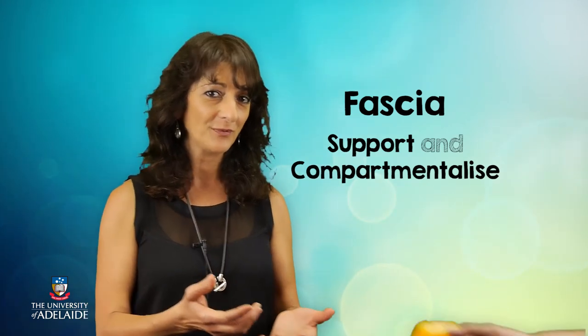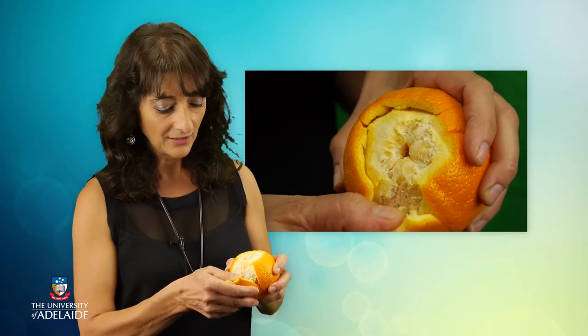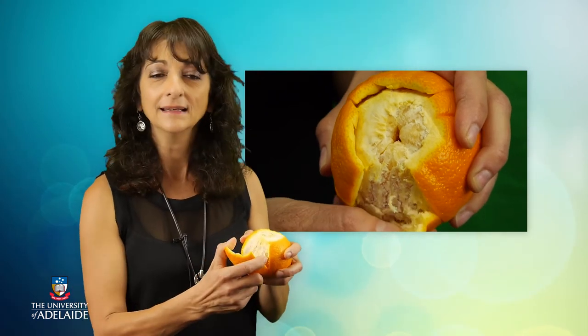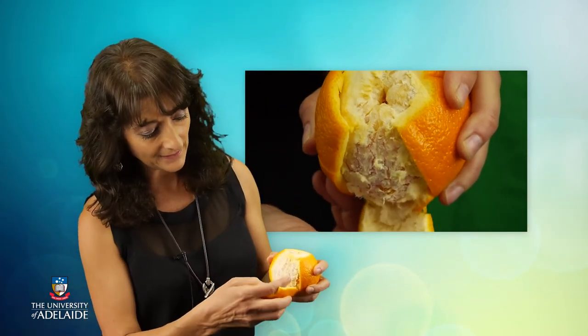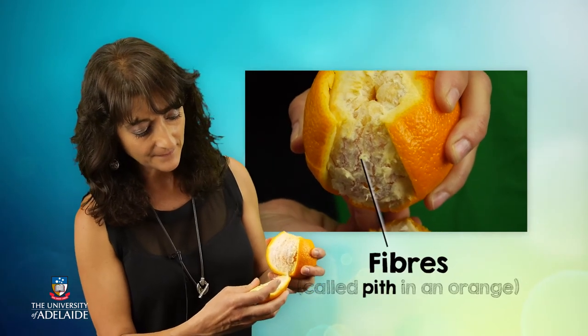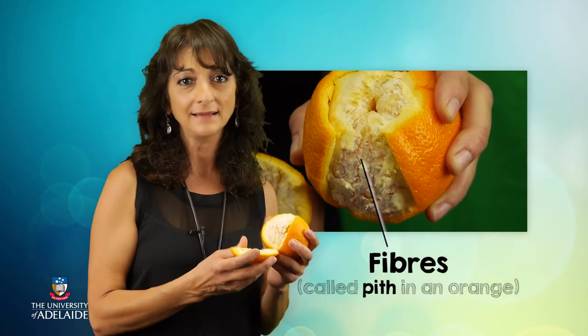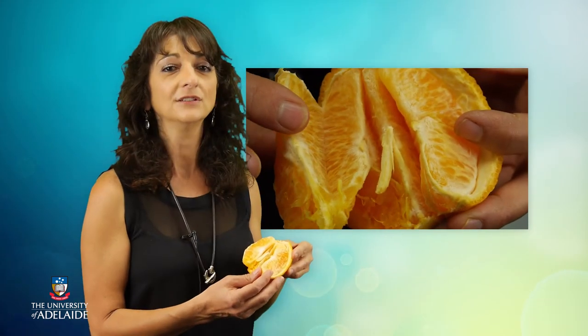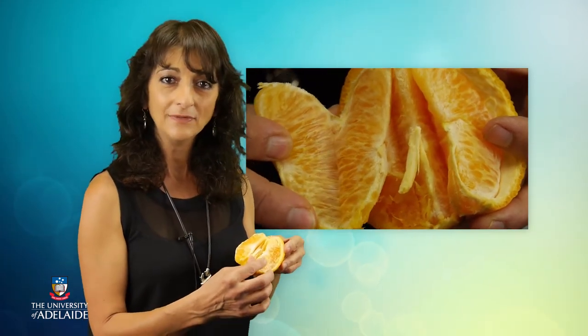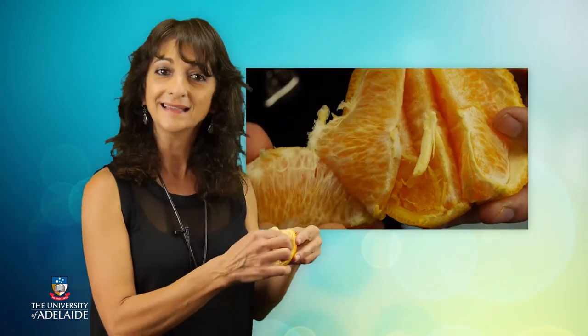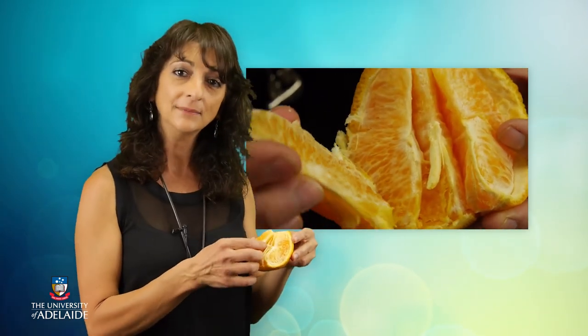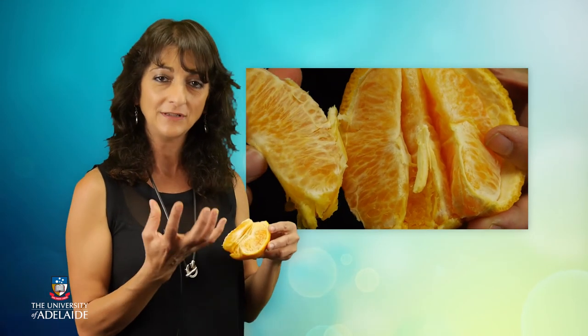Let me show you what I mean with the help of this orange. When you start to peel the orange, you can notice that the skin is actually attached to the underlying meaty bit by these delicate fibres. These delicate fibres are very similar to the loose connective tissue that lines our skin. When you look closer on the inside of the orange, you can see that there are further layers that keep these juicy pods segmented or compartmentalised, similar to the way in which our fascia compartmentalise our body structures.